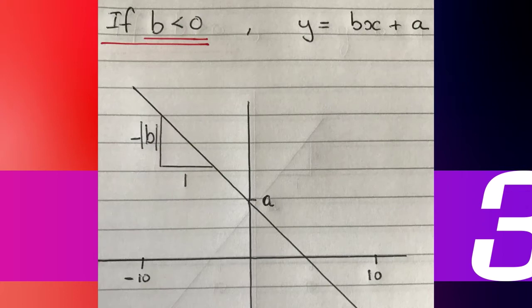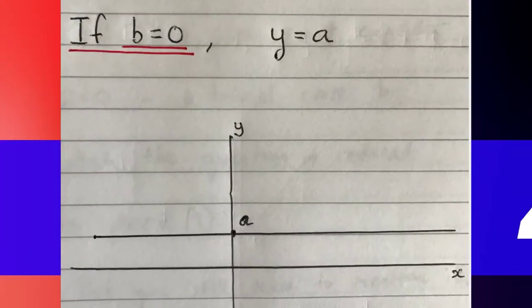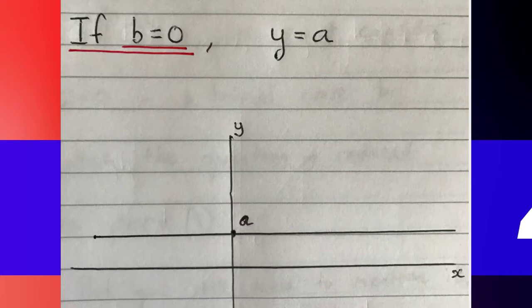Of course we must consider the last case — the trivial case where b equals zero. Then bx plus a becomes simply y equals a, a flat horizontal line, and clearly the maximum and minimum are the same value: a.